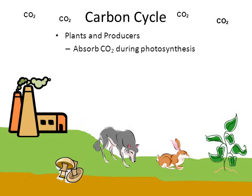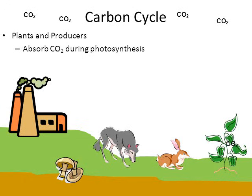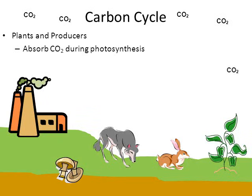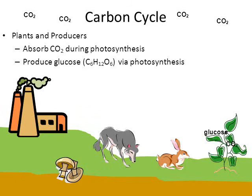When we look at the stages of the carbon cycle, let's start with plants and producers. In the animation, a plant is absorbing carbon dioxide. Plants have tiny microscopic pores on the underside of their leaves called stomata. When these stomata are open, they take in carbon dioxide — one of the requirements of photosynthesis, along with water and sunlight. They take in carbon dioxide and produce glucose, C₆H₁₂O₆, via photosynthesis. Now the carbon, in the form of glucose, is going to move up the food chain.